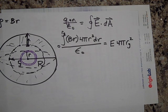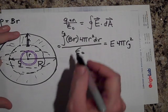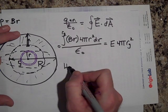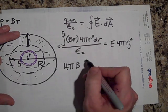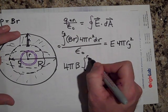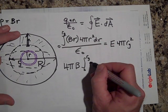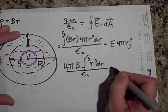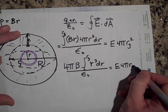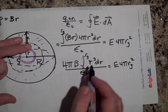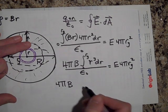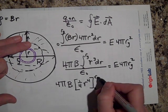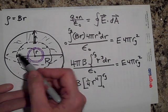Now for the math. Pulling all constants out front — 4, π, and B — I'm left with the integral from 0 to R_G of r³ dr, all over epsilon-naught, equal to E times 4π R_G squared. Solving the integral gives 4π B times one-fourth r to the fourth, evaluated from 0 to R_G, which gives the total charge enclosed by the Gaussian surface.